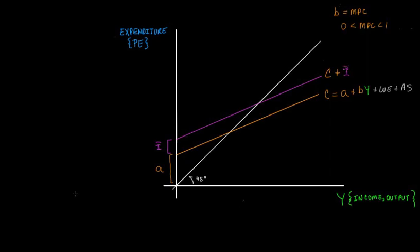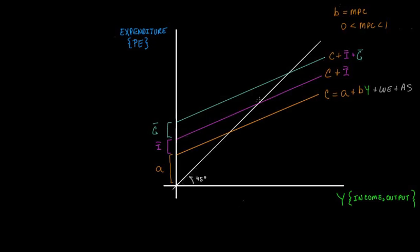The only remaining major expenditure category in a closed economy is government spending. Government spending also does not vary with the level of income, which is why both investment and government spending have a bar over them indicating they are fixed. So in our closed-economy Keynesian cross diagram, all planned expenditures are: consumption plus investment, not dependent on income, plus government spending, also not dependent on income.